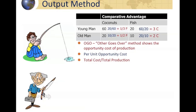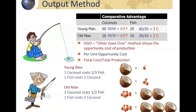This is a real easy trick that works every time. Looking at the opportunity costs visually: one coconut for the young man costs one-third of a fish; one fish costs three coconuts. For the old man, one coconut costs half a fish, and one fish costs two coconuts. The young man, when he produces one coconut, costs him a third of a fish. The old man, when he collects a coconut, costs him a half of a fish. So the young man is actually better comparatively in the production of coconuts.